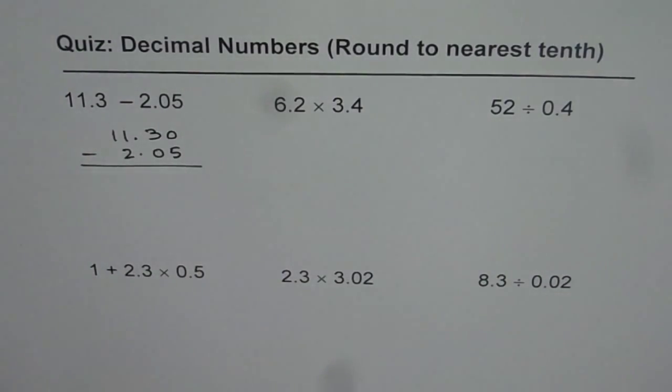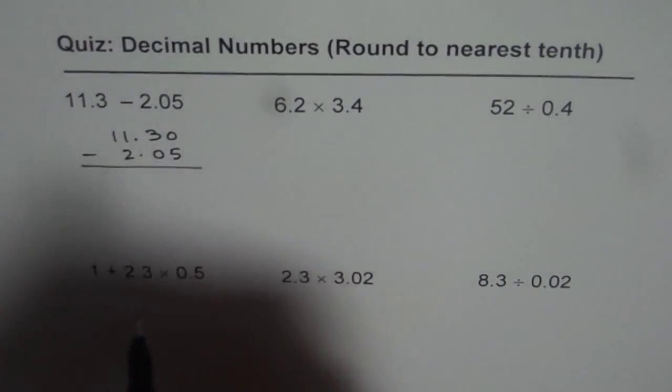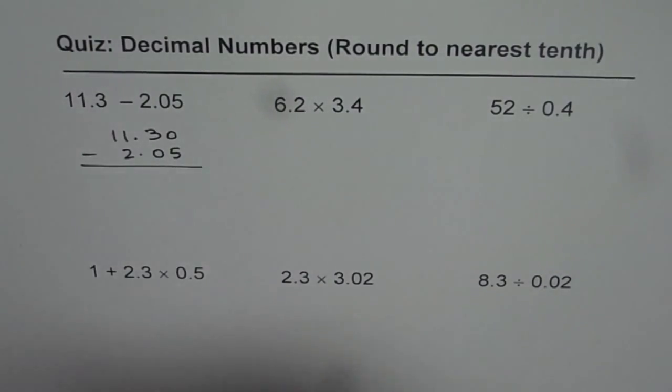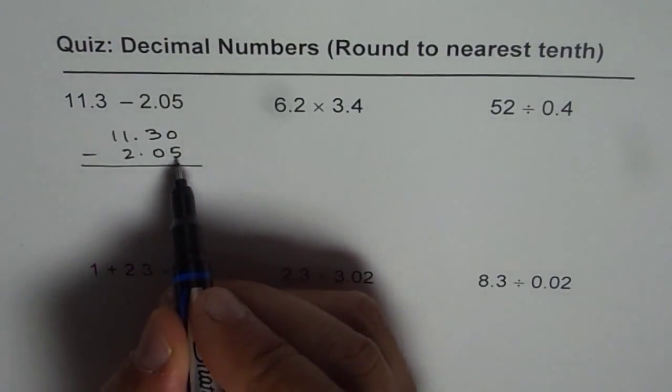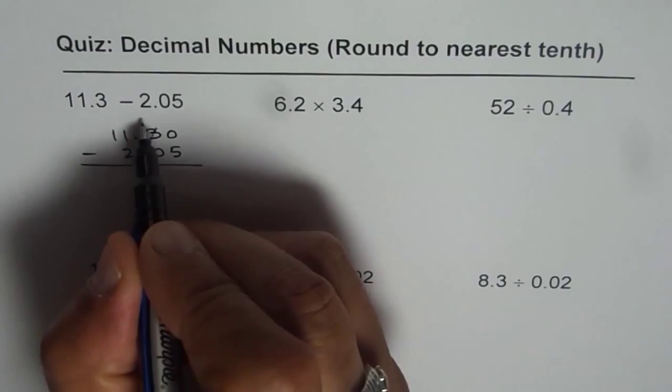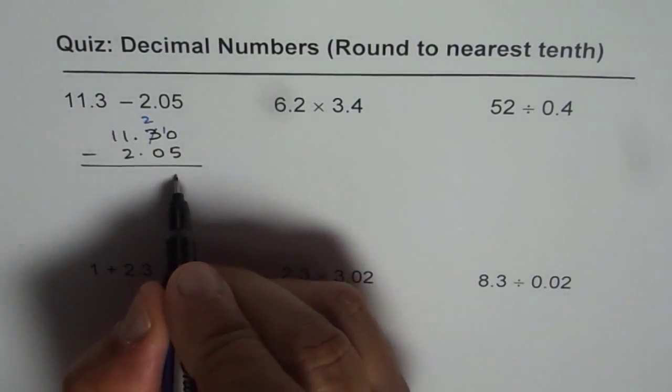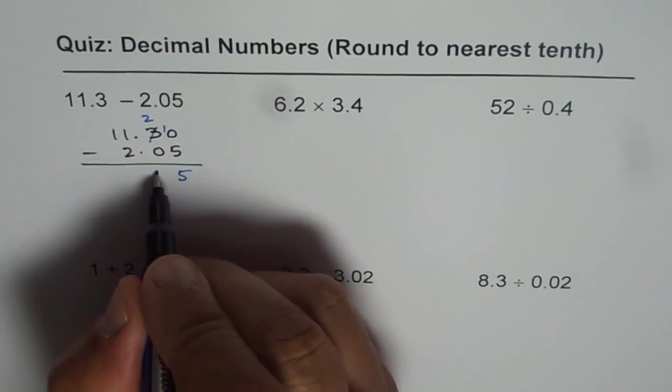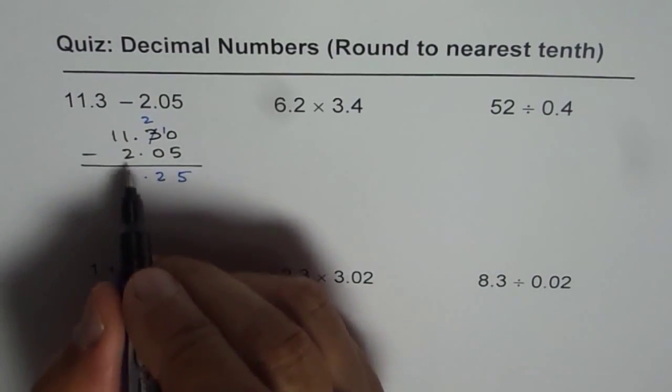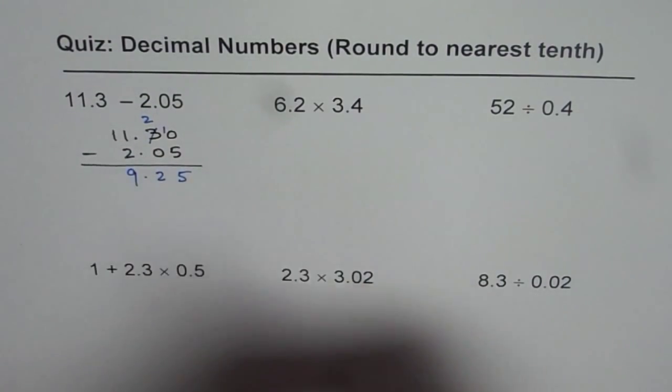We cannot take away 5 from 0, so we need to borrow. So it becomes 2 and that is 10. So 5 take away from 10 is 5 and then we have 2 and 11 take away 2 is 9.